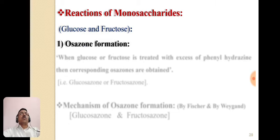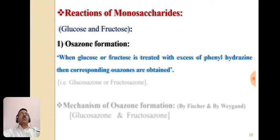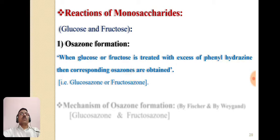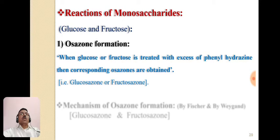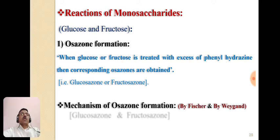Our first reaction is osazone formation. Osazone formation is the reaction of glucose or fructose with excess of phenylhydrazine. When glucose is treated with excess of phenylhydrazine, we get glucosazone. When fructose is treated with excess of phenylhydrazine, we get fructosazone. There are two types of mechanism: the first is given by Fischer, and the second is the modern method given by Wegand.